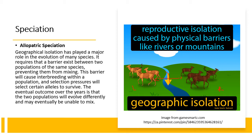For example, if over on one side there is a shortage of water, there might be the evolution of an allele that enables them to survive with less water compared to the ones on the other side, which might have an abundance of water. As a result, what allopatric speciation does is that over the years, the two populations will evolve very differently from each other and may eventually be unable to mix.